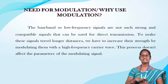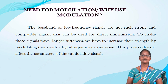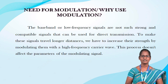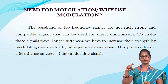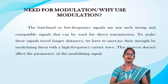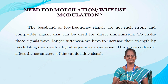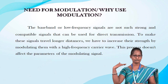In modulation, high frequency carrier signals are used to transmit the message signal, and the carrier signal parameters are changed according to the instantaneous values of the modulating signal. Another reason to modulate a signal is to allow a smaller antenna. A low frequency signal would need a huge antenna, as an antenna needs to be about 1/10th the length of the wavelength of the signal to be efficient. Modulation converts the low frequency signal into high frequency, which has a smaller wavelength and allows a smaller antenna.